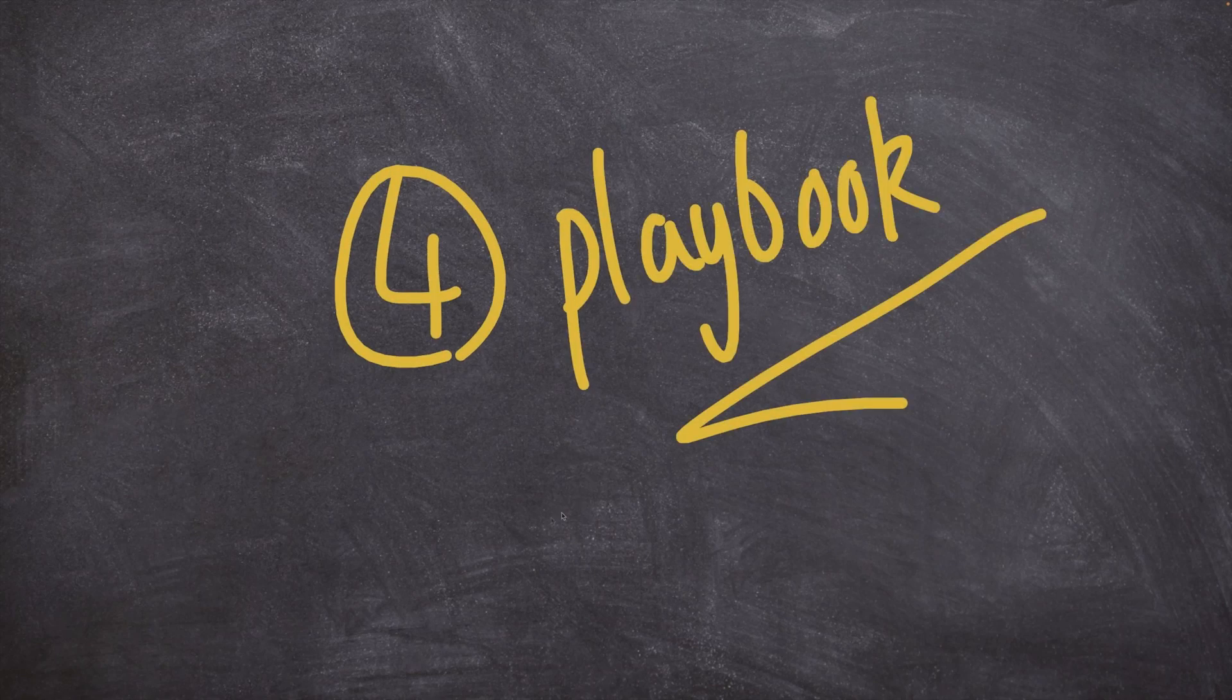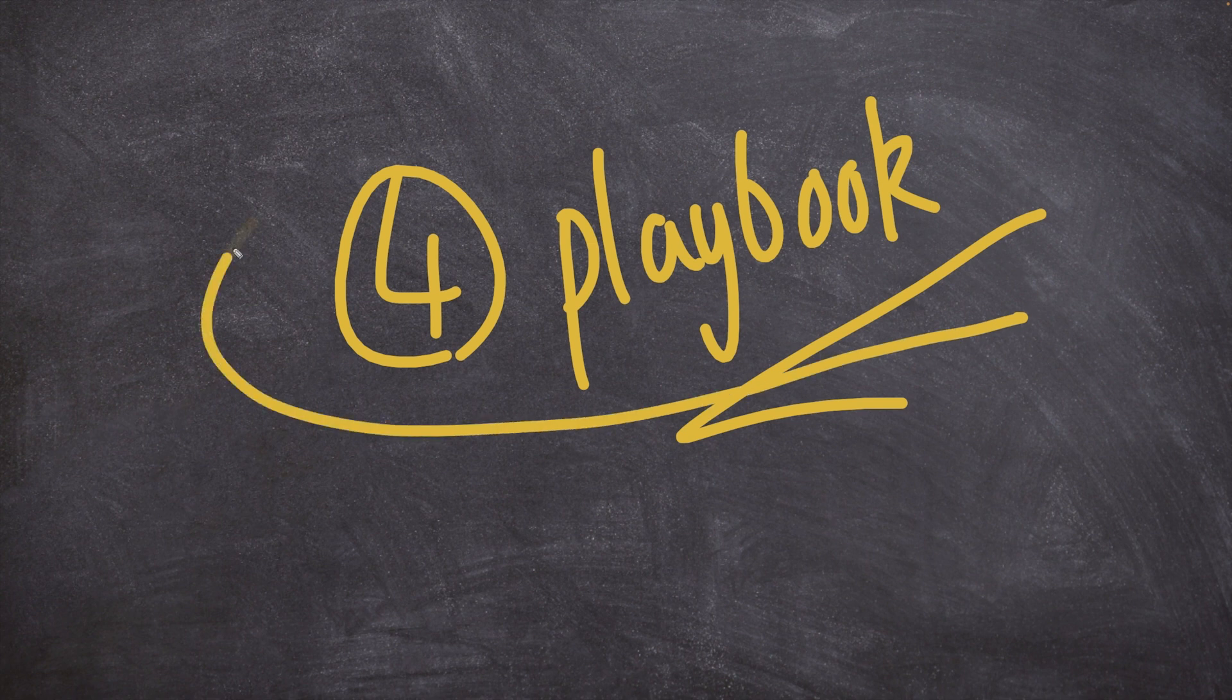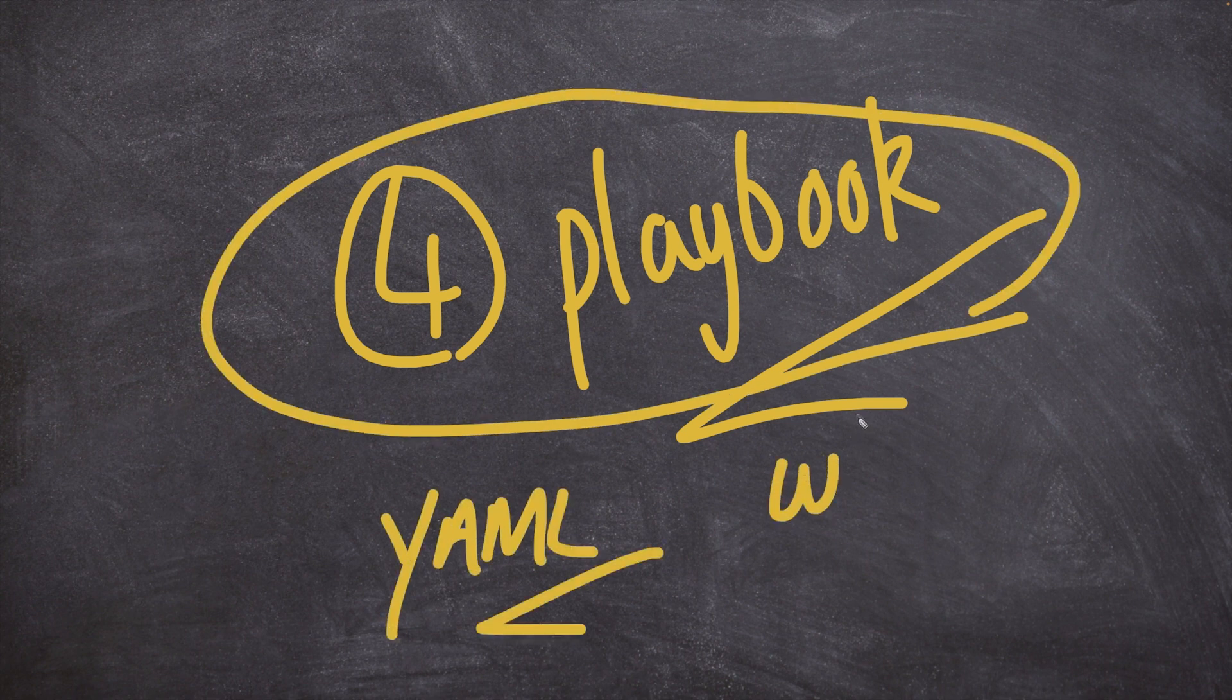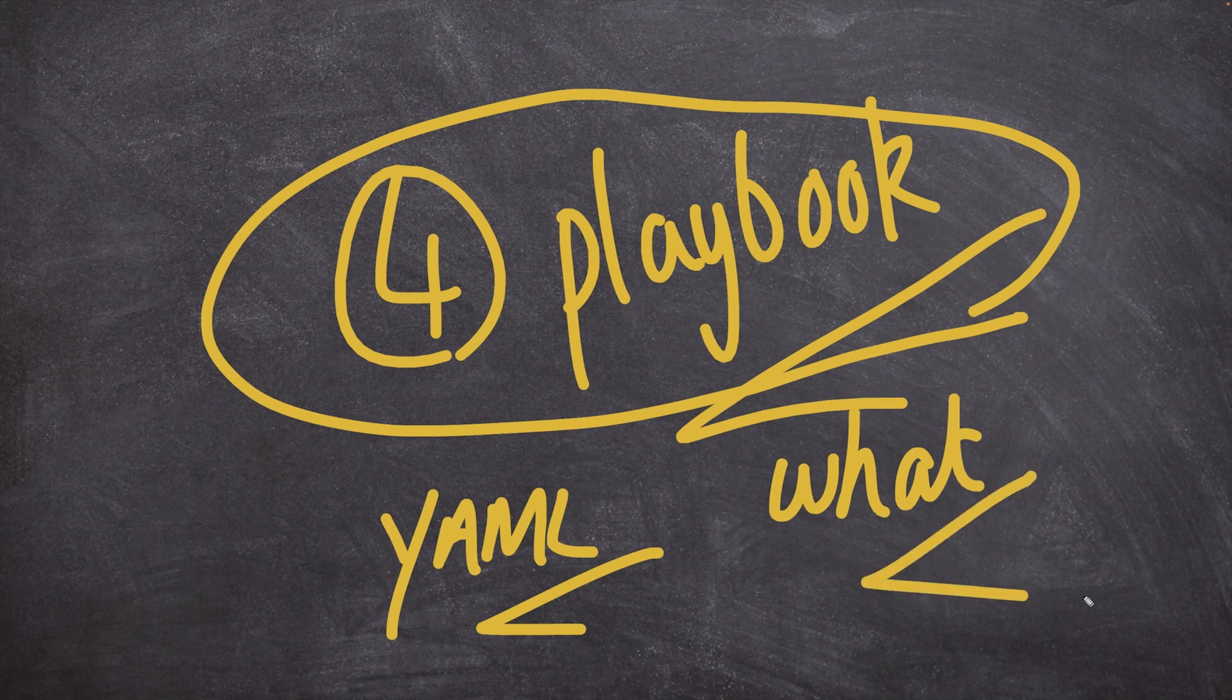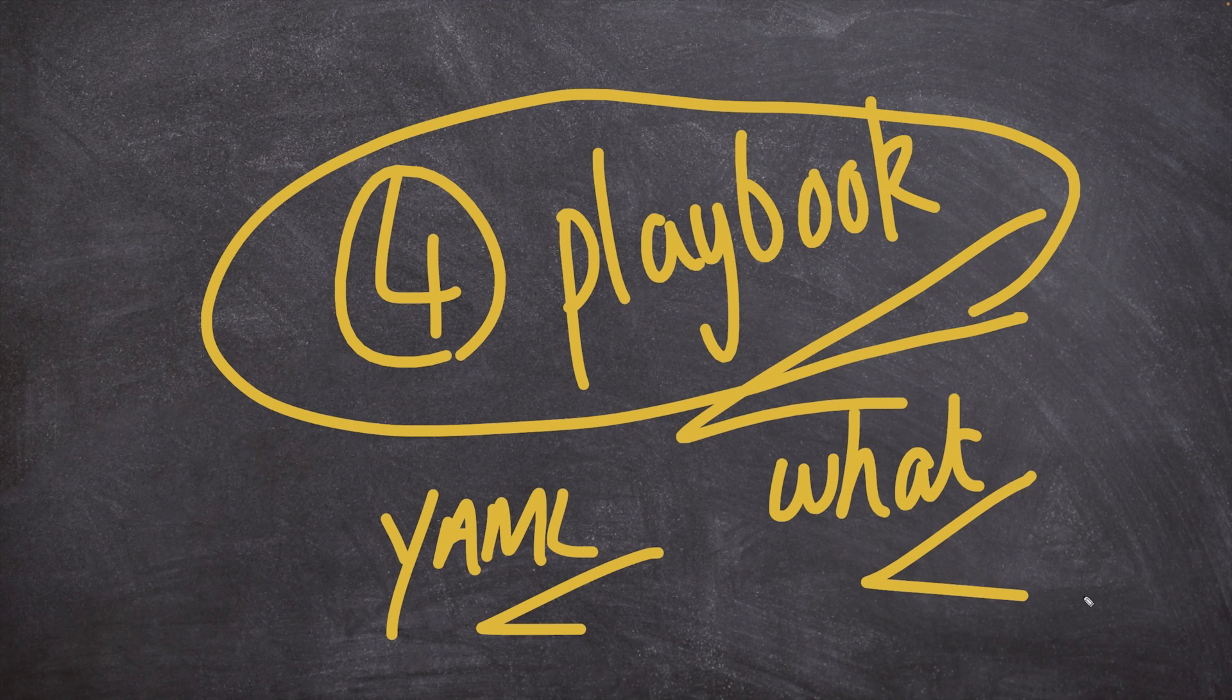The fourth and final component is the playbook, and this is how we tie everything together. It's inside the Ansible playbook, which is written in YAML, where we tell Ansible what we want it to do. This is where we write our instructions - go and configure a DNS server, update NTP configurations, create new users on all these devices.